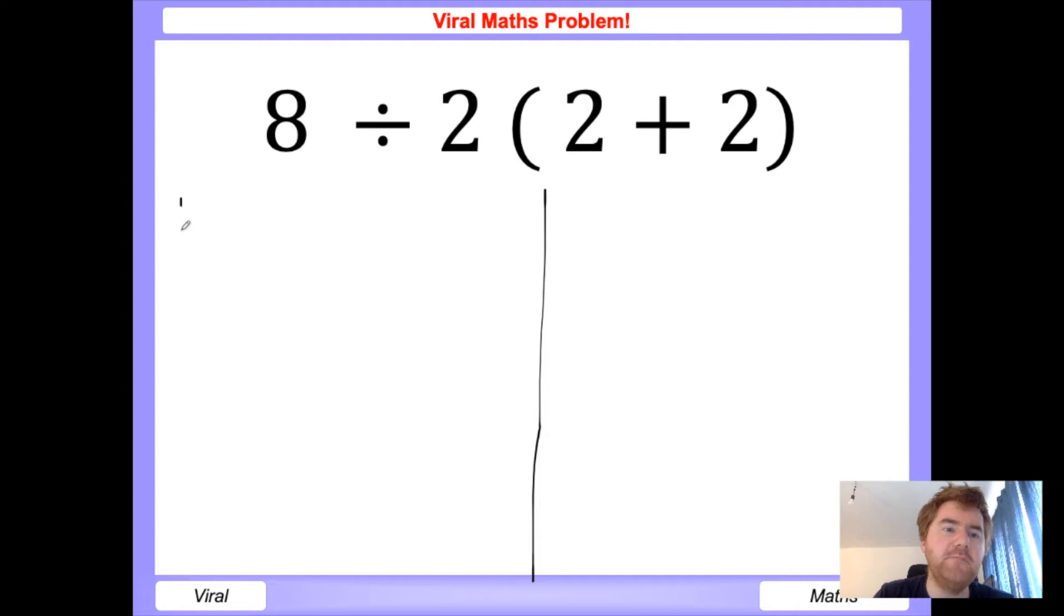this as a fraction. So Method 1 will be to write it as 8 divided by 2(2 + 2) like so. Once you've written it as a fraction, I think it's fairly straightforward how to work this out. We do the brackets first, so we're going to get 8 over 2—well, 2 plus 2 is